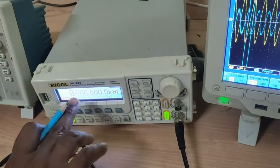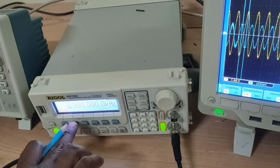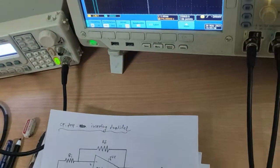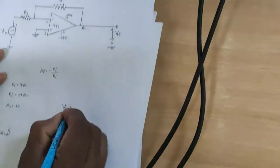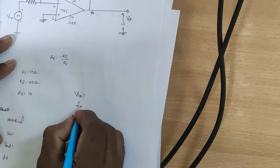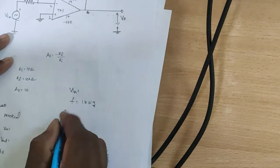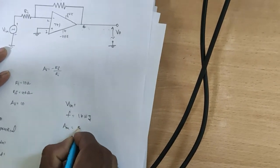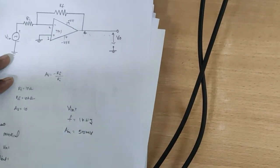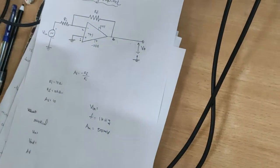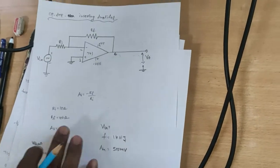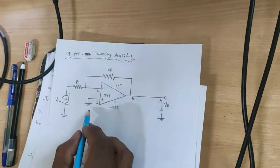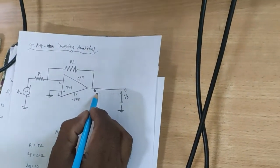The frequency is 1 KHz and amplitude is 500 millivolts. The input Vin has a frequency equal to 1 KHz and amplitude equal to 500 millivolts. These input signals are given to the inverting terminal, and the output is taken across the 6th pin.